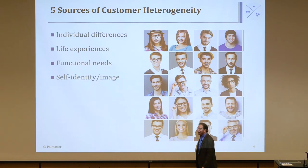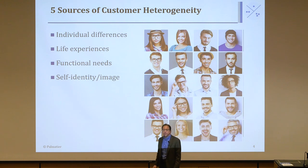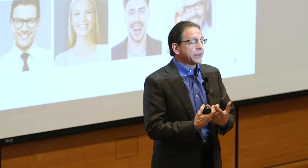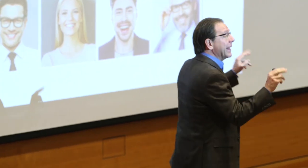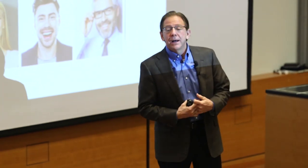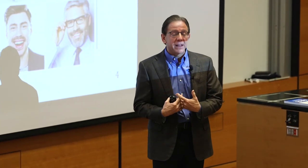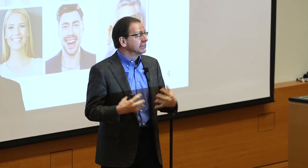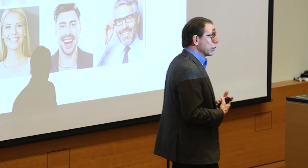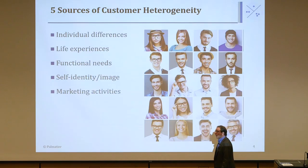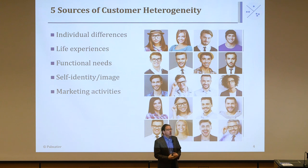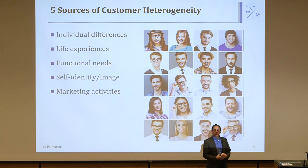The fourth source is self-identity and image, especially true for visual items others can see. People who identify as goth might want dark makeup, leather, or black clothes. Harley Davidson motorcycle riders might want a leather jacket as part of their image. Fifth is marketing activities — like the Volvo example. If you do enough marketing, you can change what people desire about a product and convince them that a particular attribute is important.